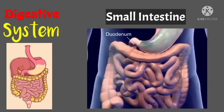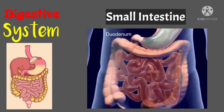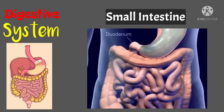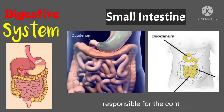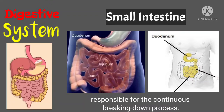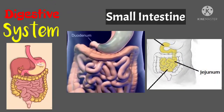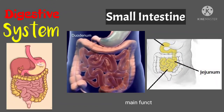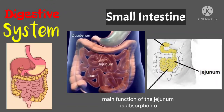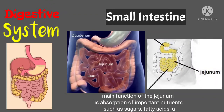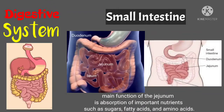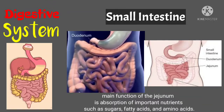The small intestine comprises three main sections. Number one is the duodenum — it is the first segment of the small intestine and is largely responsible for the continuous breaking-down process. Number two is the jejunum — it is the middle section of the small intestine and is about 2 meters long. The main function of the jejunum is absorption of important nutrients such as sugars, fatty acids, and amino acids.